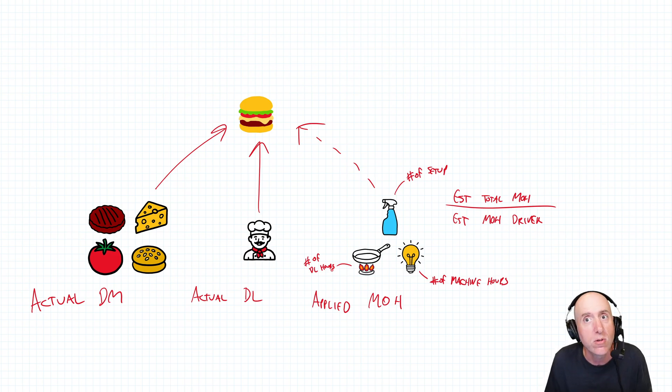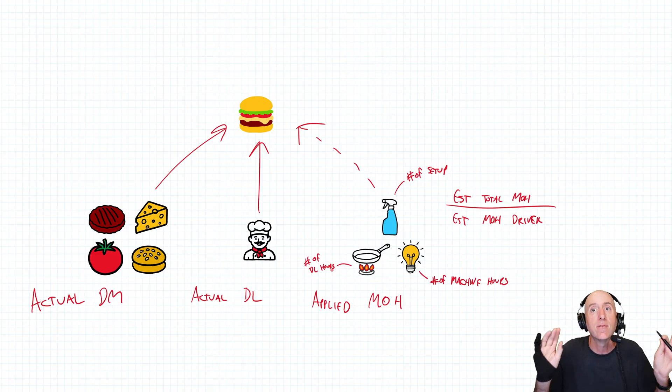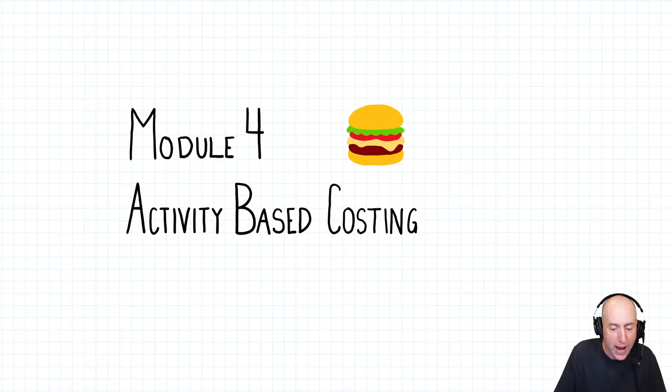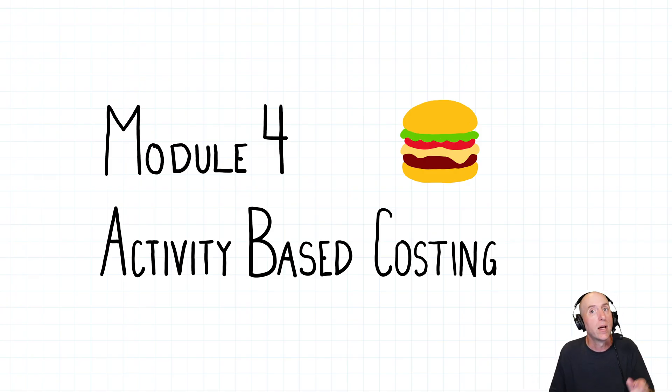Most companies don't use activity-based costing because it's more data to gather. For most companies, a traditional one overhead rate is good enough. It gives them good enough data. But when companies are unhappy with their costing system, activity-based costing is something they might explore. That's what Module 4 is all about. The best way to learn accounting is to do examples. Stay tuned for the next video where we compare traditional costing with activity-based costing. See you in the next video.